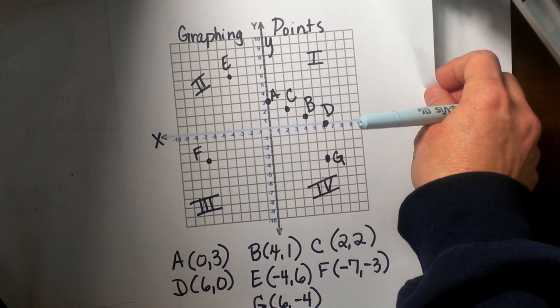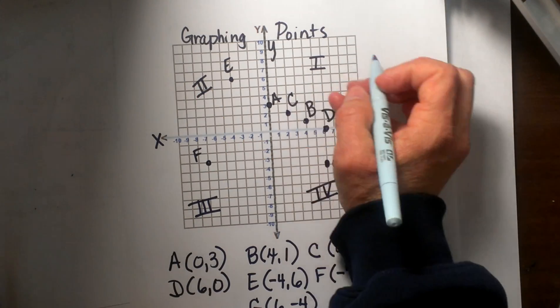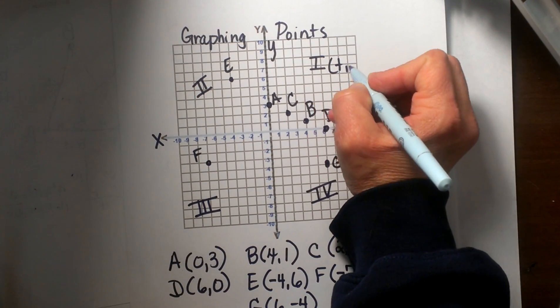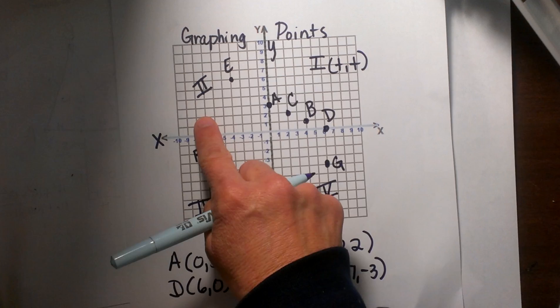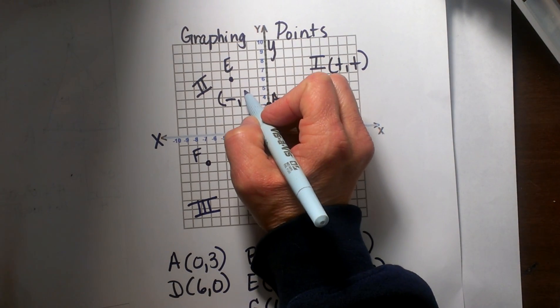So we have just gone over the signs of the quadrants. Quadrant 1, all the points in this quadrant are both positive. All the signs in the second quadrant are a negative followed by a positive.